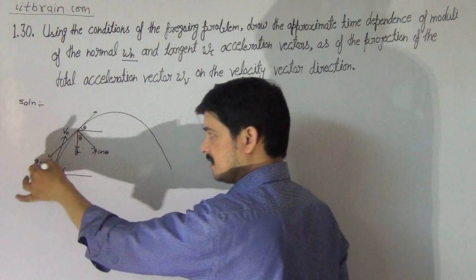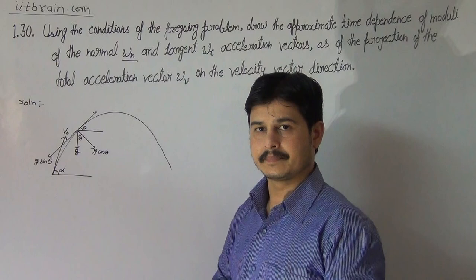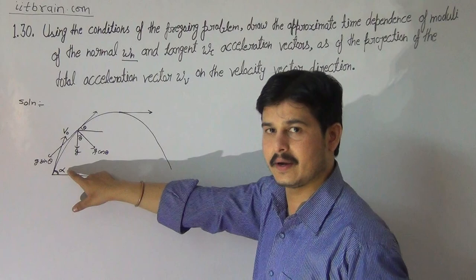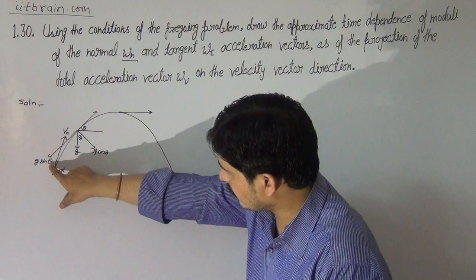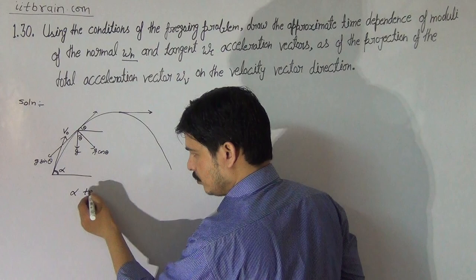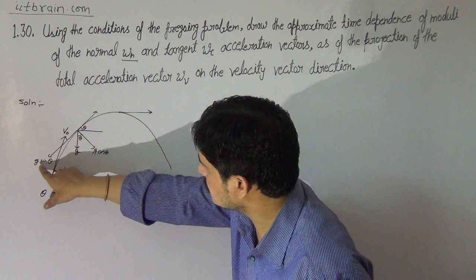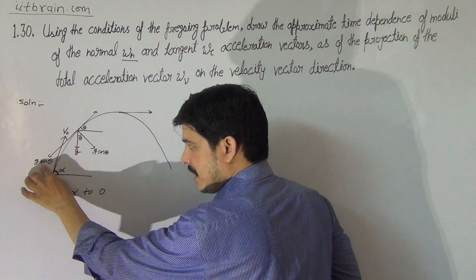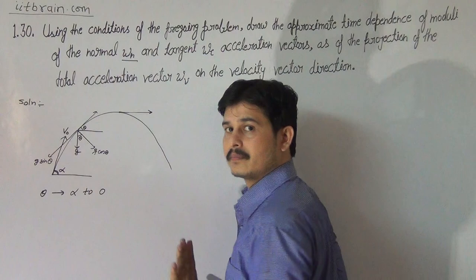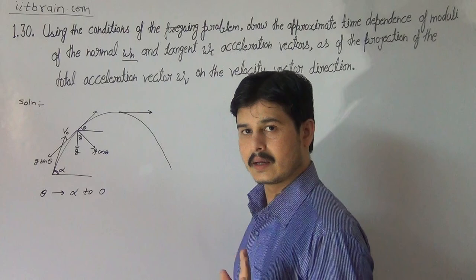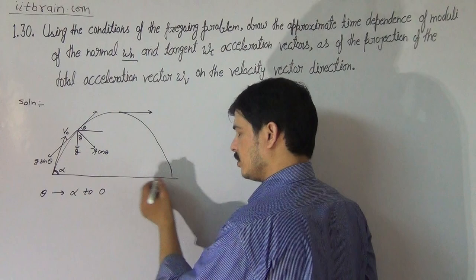Since sin(theta) is an increasing function — and we see that the angle theta ranges from alpha at the start down to zero at the top point, then back up — the tangential acceleration magnitude g·sin(theta) starts at g·sin(alpha) at the initial point, decreases to g·sin(0) = 0 at the top point, and then increases again from top to the final point.